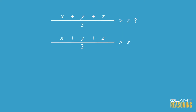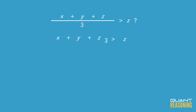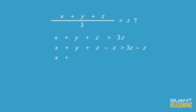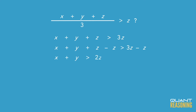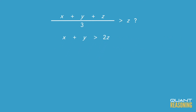Multiplying both sides by three, we would be asking: is x + y + z greater than 3z? Subtracting z from both sides, we're asking: is x + y greater than 2z?